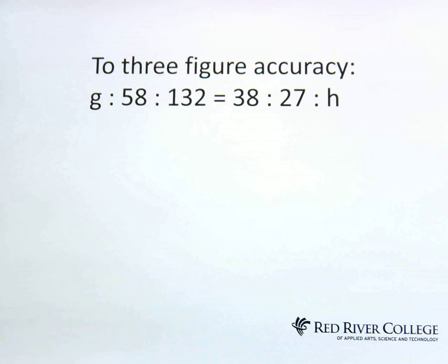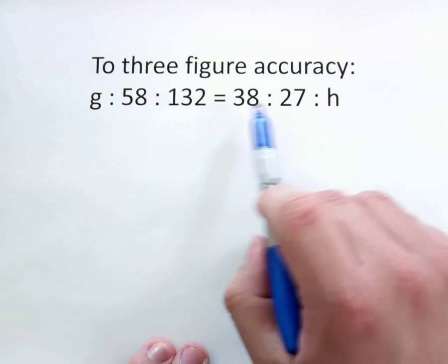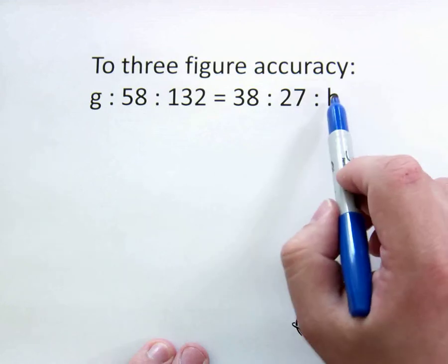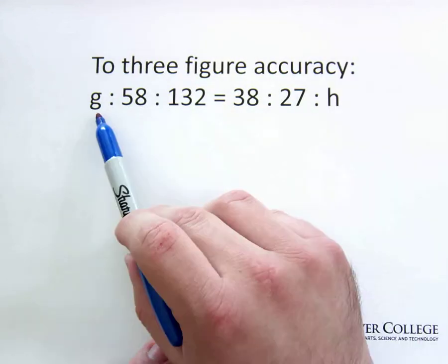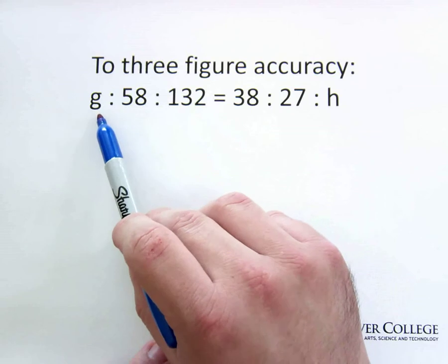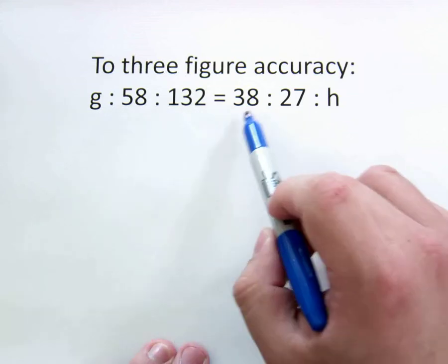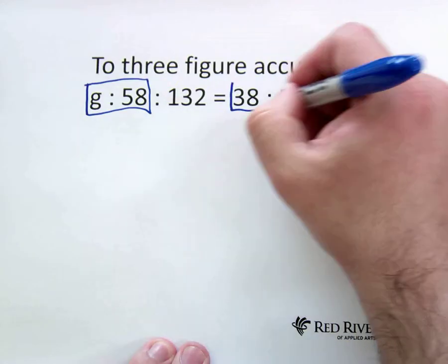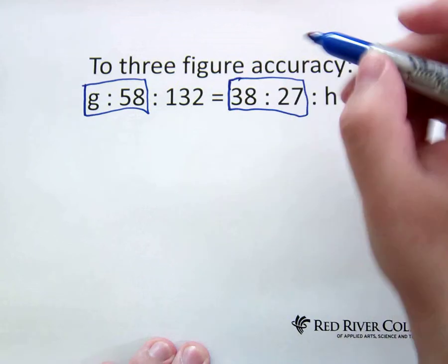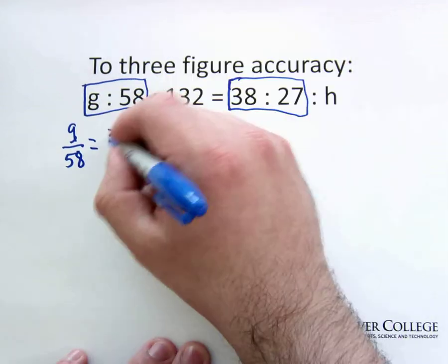Now we're going to try another hard one here. We've got g is to 58 to 132 is equal to 38 to 27 to h. We've got two unknowns, g and h. Now, because these are in the same order on both sides, g to 58 is the same as 38 to 27. So let's just put that in a little box, and that in a box. And so what we're going to do now is go g over 58 is equal to 38 over 27.